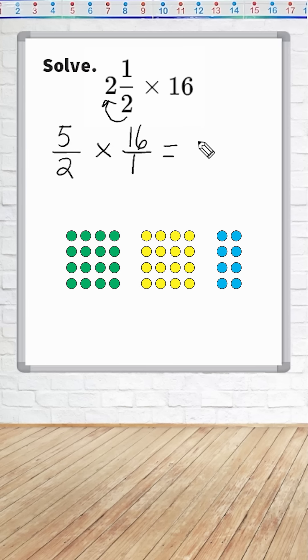We have 5 times 16, which is 80, and on the bottom we have 2 times 1, which is 2. And 80 divided by 2 is equal to 40.